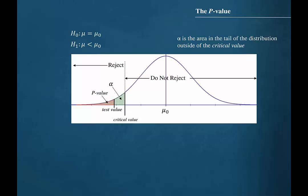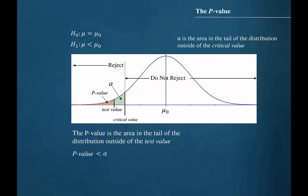Now let's look at a left-tailed test where the alternative hypothesis states that the population mean is less than some hypothesized value. The graph indicates that in this particular instance the test value has landed in the rejection region. Remember that the p-value is the area in the tail of the distribution outside of the test value, again the area under the curve shaded in red. In this instance the p-value is less than alpha, so our decision should be to reject the null hypothesis.